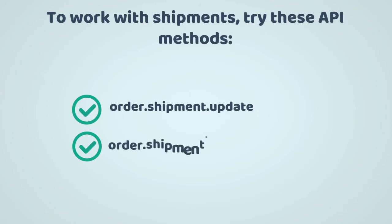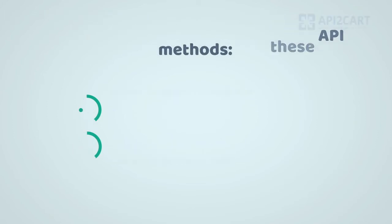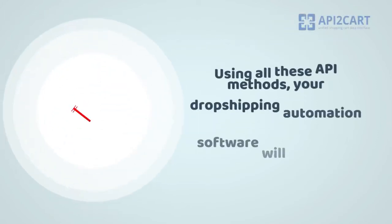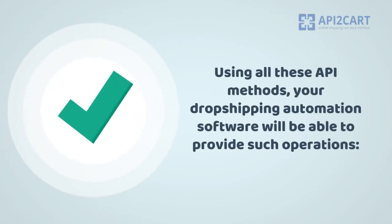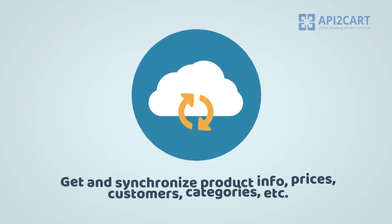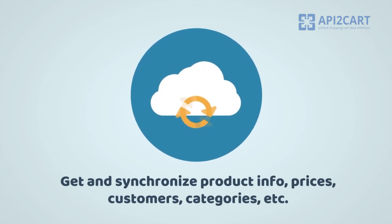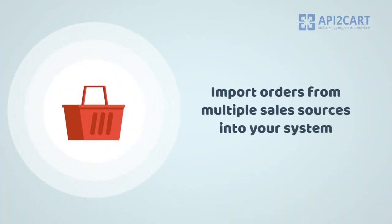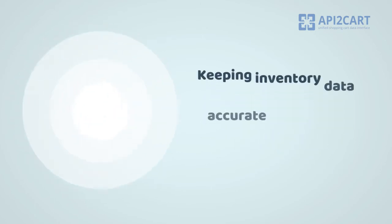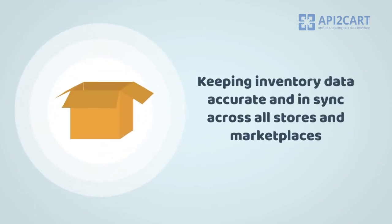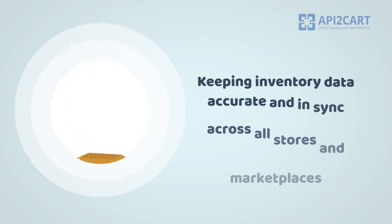Working with shipments is easy with Order Shipments Update and Order Shipment Add methods. Using all these API methods, your dropshipping automation software will be able to provide such operations: get and synchronize product info, prices, customers, categories, etc., and import orders from multiple sales sources into your system.